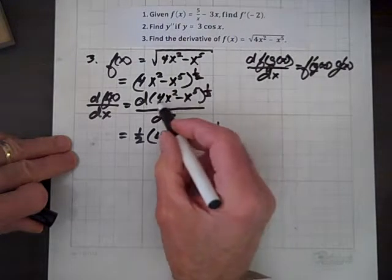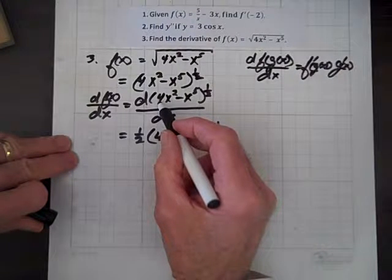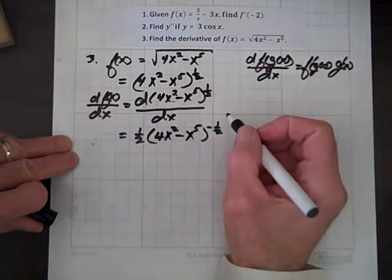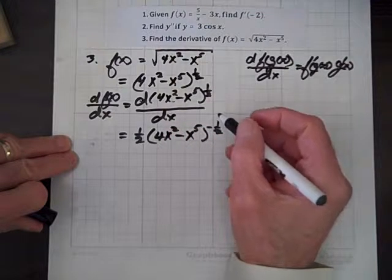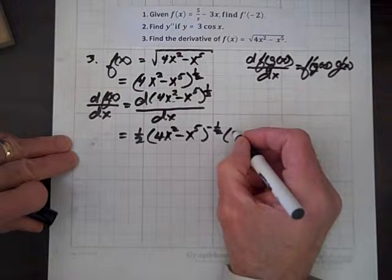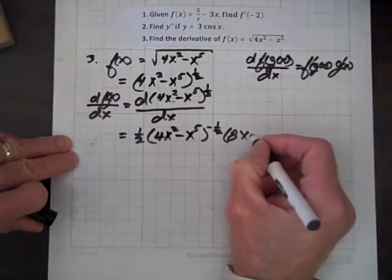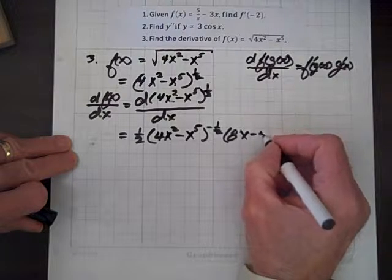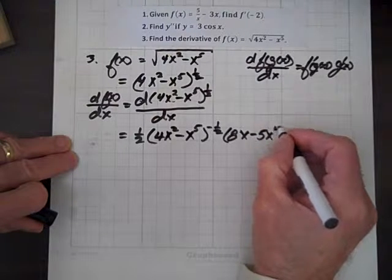And now we'll go inside. Our g of x in this case is 4x squared minus x to the fifth. We'll go inside and take the derivative of that and we get, by the power rule, 8x minus 5x to the fourth.